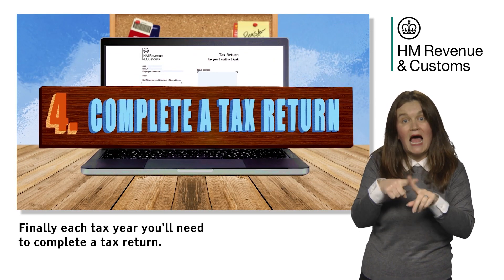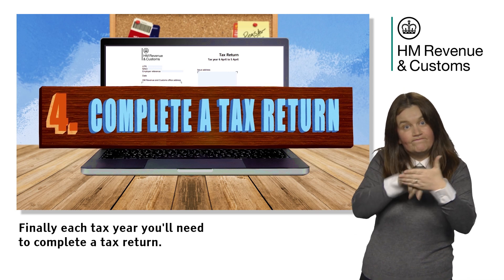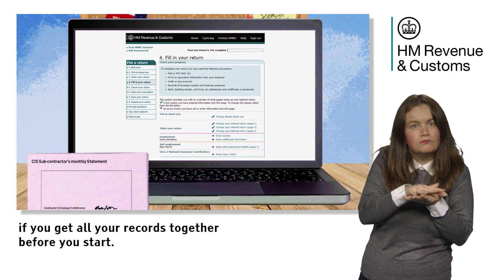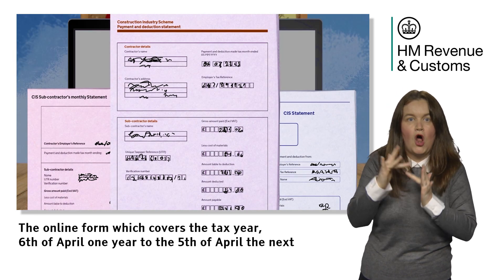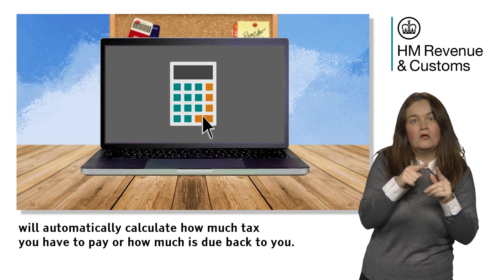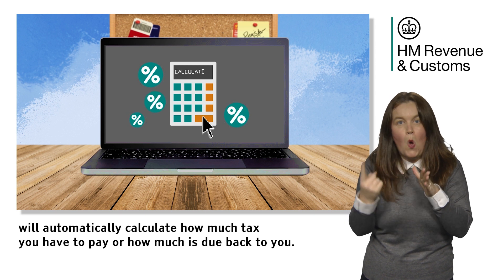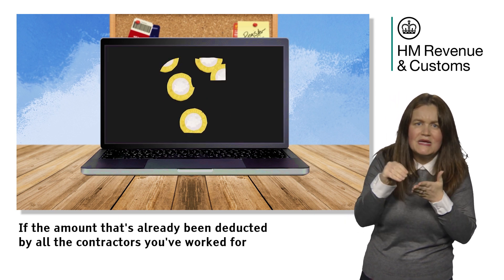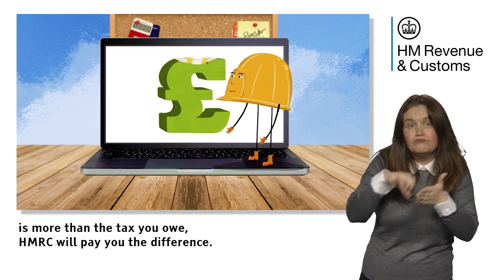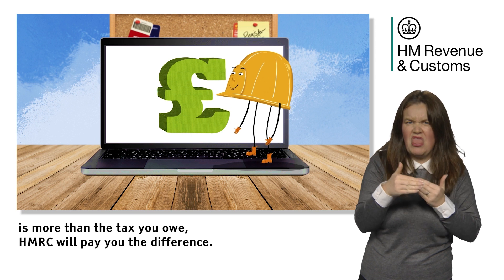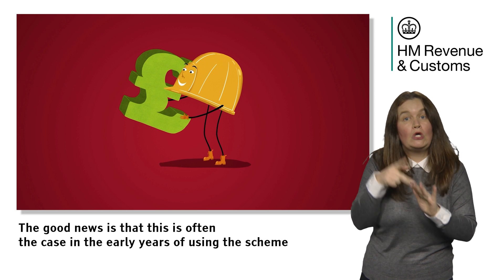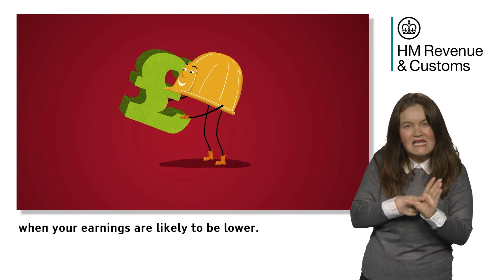Finally, each tax year you'll need to complete a tax return. You can do this online and you'll find it easier to do if you get all your records together before you start. The online form, which covers the tax year from 6 April one year to 5 April the next, will automatically calculate how much tax you have to pay or how much is due back to you. If the amount already deducted by all the contractors you've worked for is more than the tax you owe, HMRC will pay you the difference. This is often the case in the early years of using the scheme when your earnings are likely to be lower.